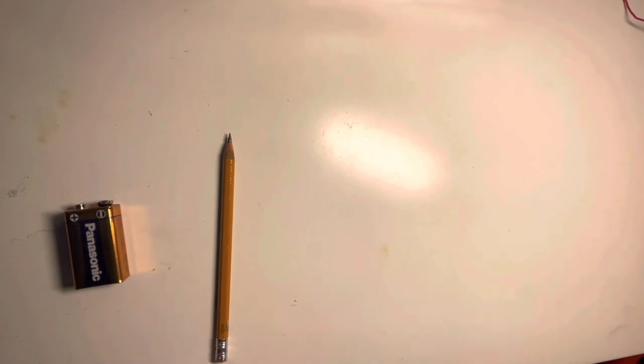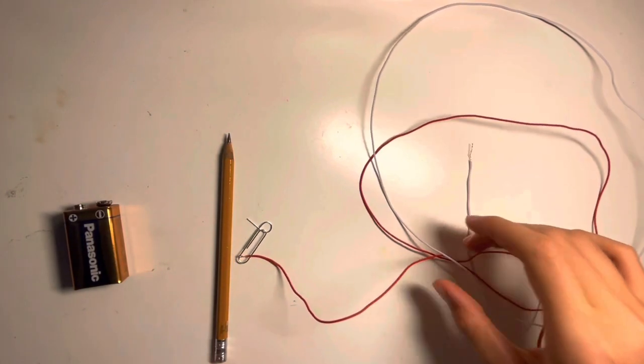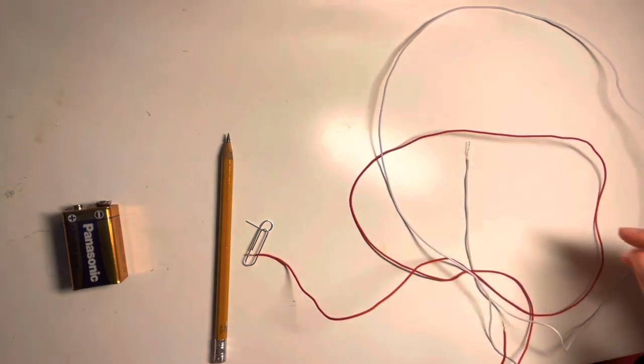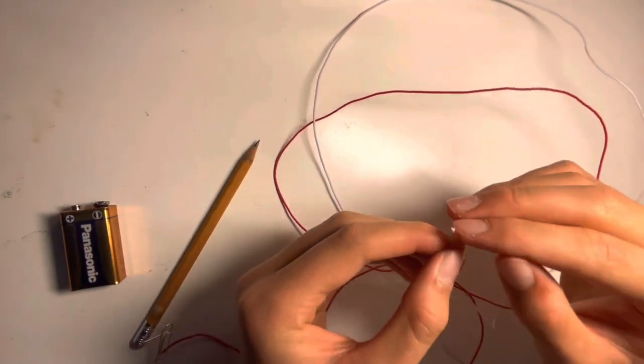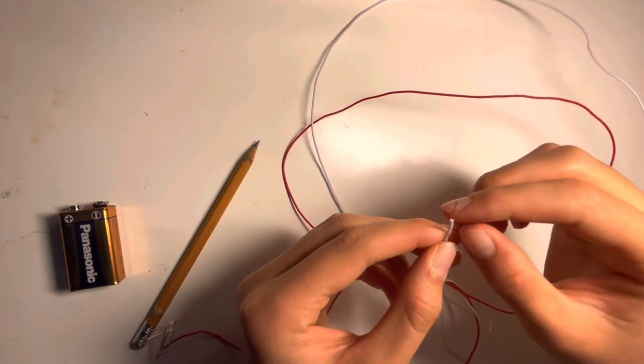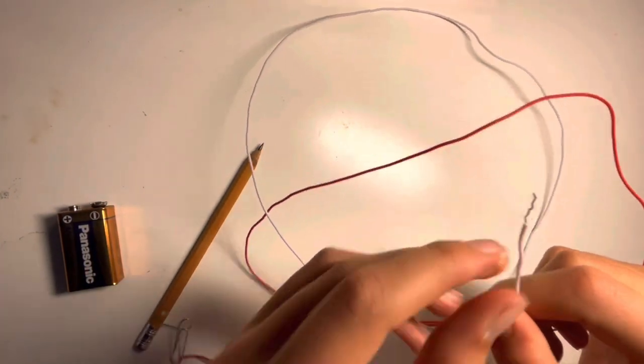Then you want to get some wires - a positive wire and a negative wire. What you want to do with scissors, you just cut away this edge so you have the copper wire outside.